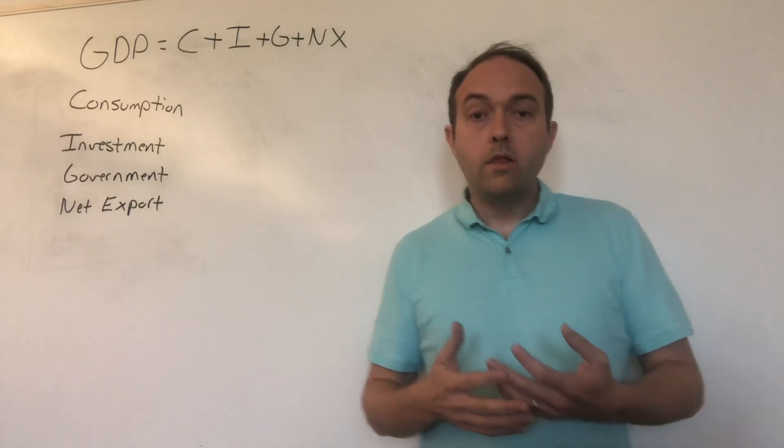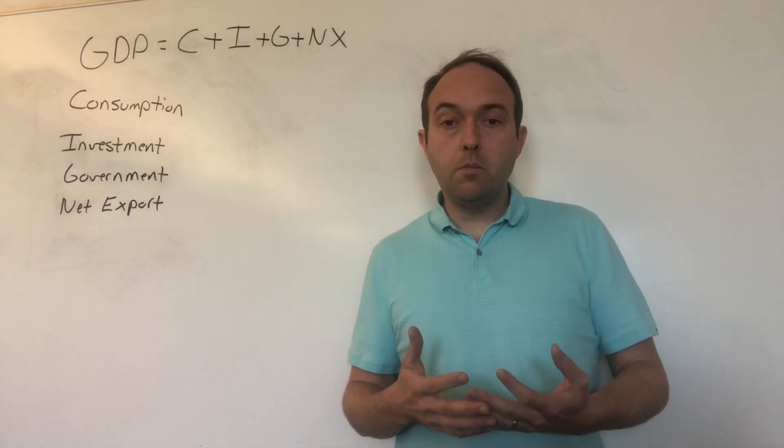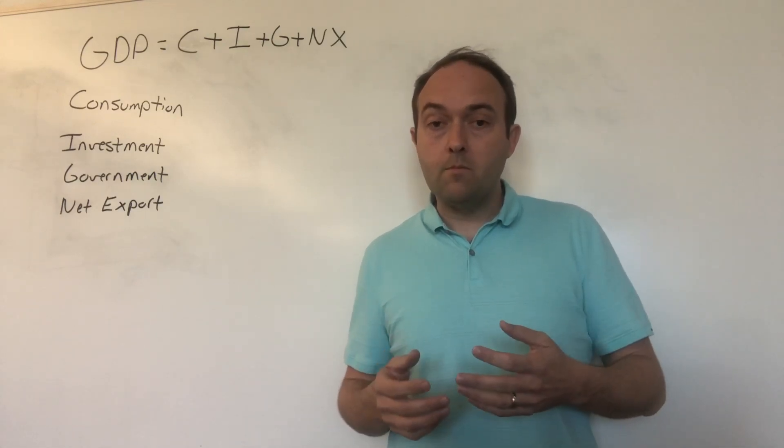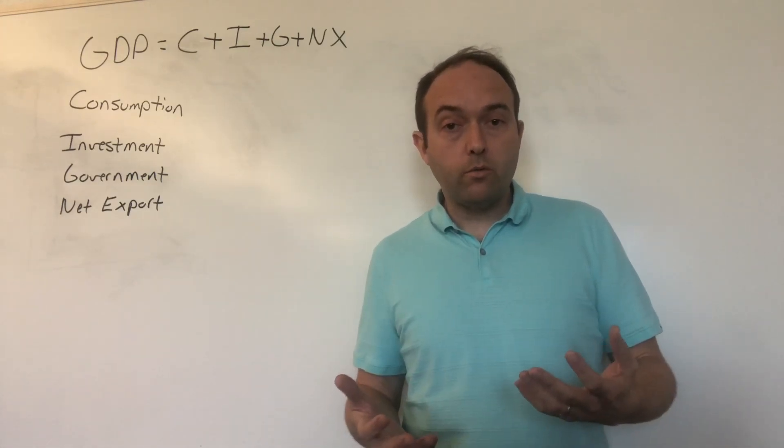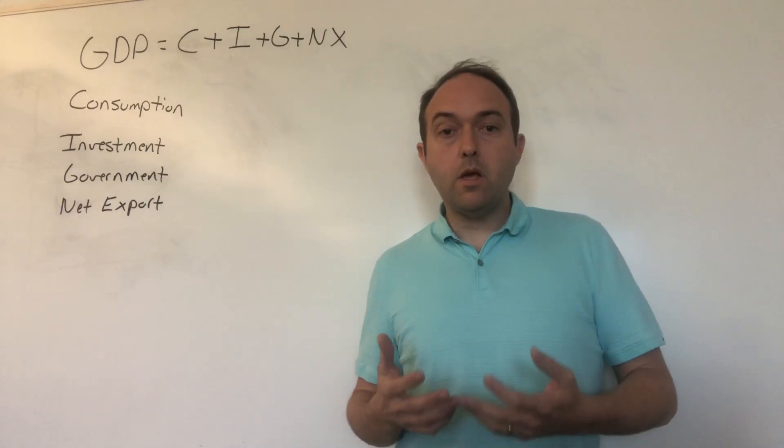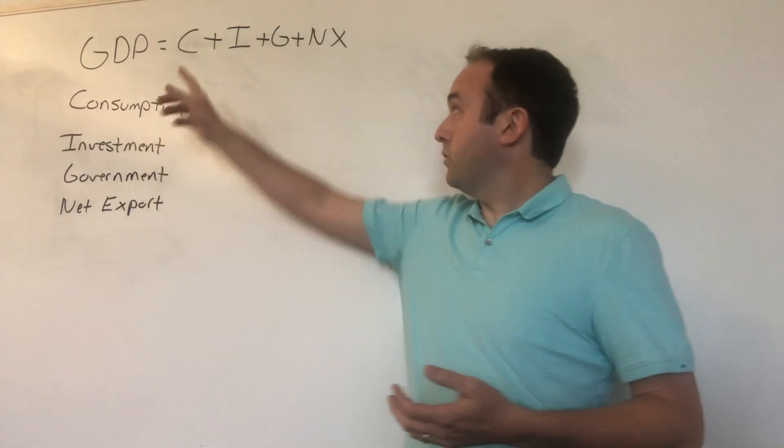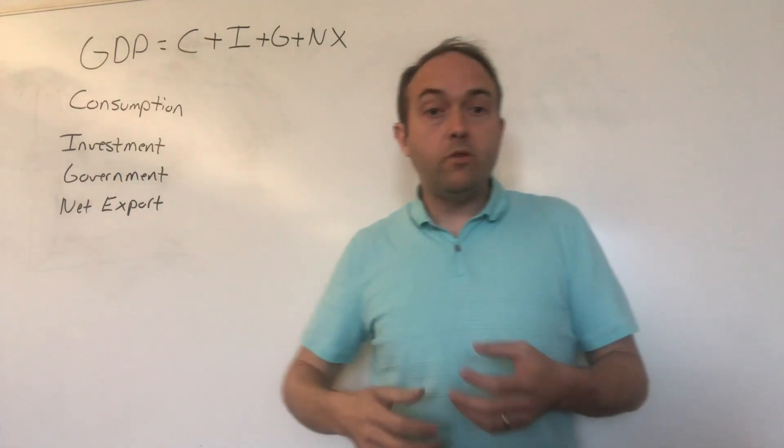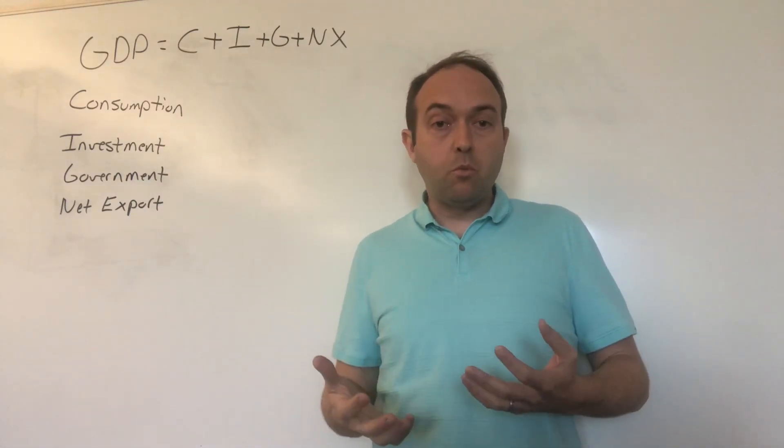The last thing that we look at when we calculate GDP is NX or X minus M. You might see it in your textbooks as either NX or X minus M, and that just means net exports. When we calculate GDP using this approach, the C plus I plus G, that's missing some stuff. It's missing first exports.